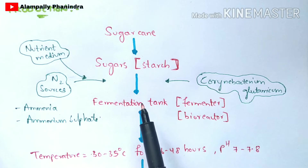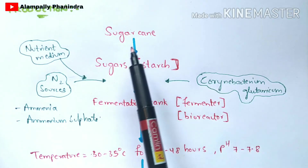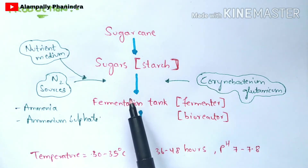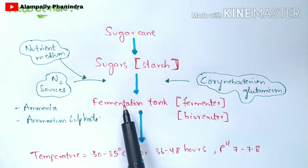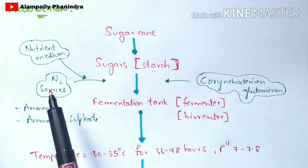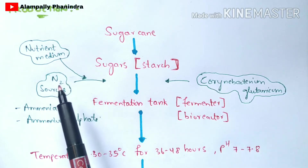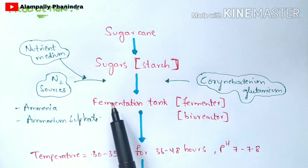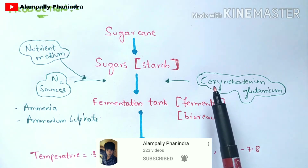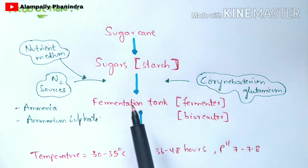After cleaning the fermenter tank, you pour the sugarcane juice into the fermentation tank. You also add the nutrient medium, which consists of nitrogen sources and other ingredients. Additionally, you add the microorganism responsible for producing glutamic acid — Corynebacterium glutamicum. So three ingredients are added in total to the fermentation tank, which is also called a fermenter or bioreactor.